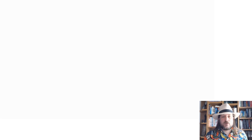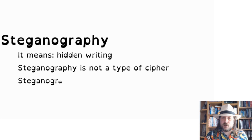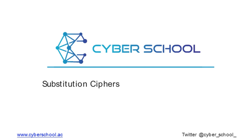Last, we have steganography, which means hidden writing. Steganography is different from a cipher because it hides a message instead of making it difficult to read. Those sound the same but you will see the difference when we've done all three. Steganography is part of cryptography as well.